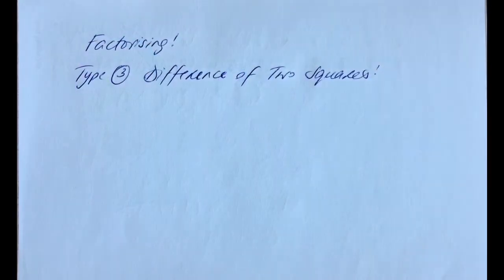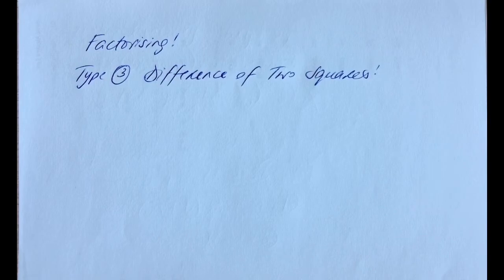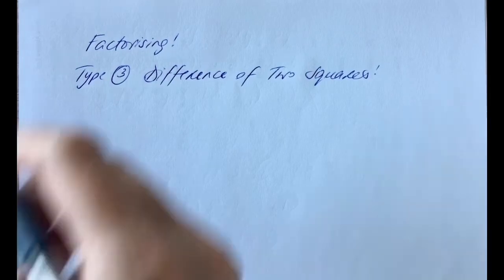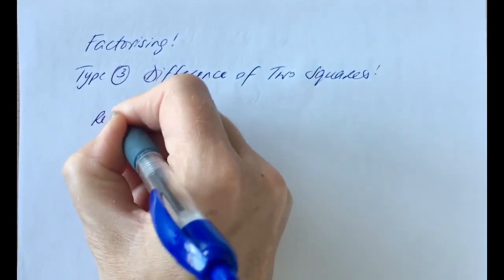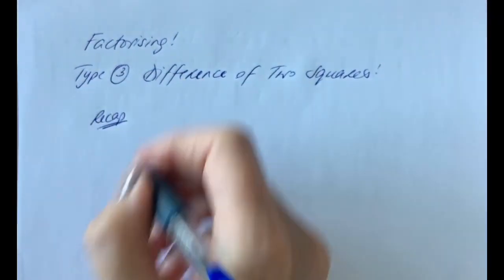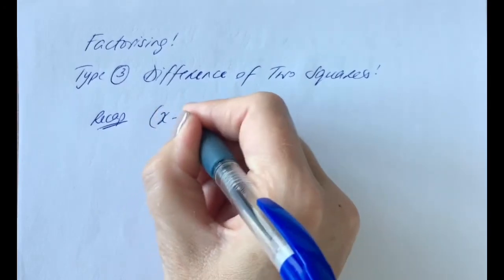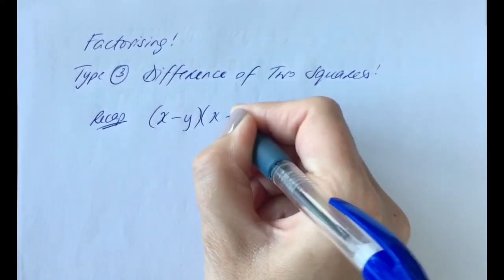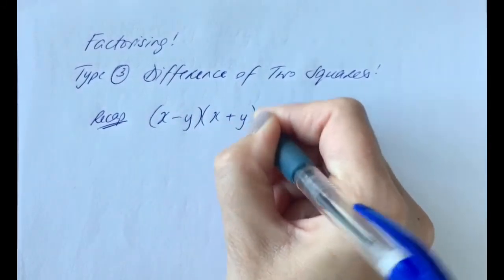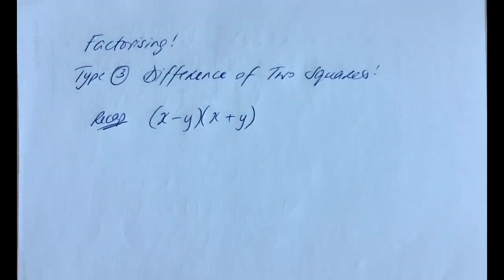In this video we're going to look at the third type of factorizing, which is the difference of two squares. Before I get into this, I also want to do a recap. So let's say you were multiplying x minus y in one bracket with x plus y in another bracket — double brackets.